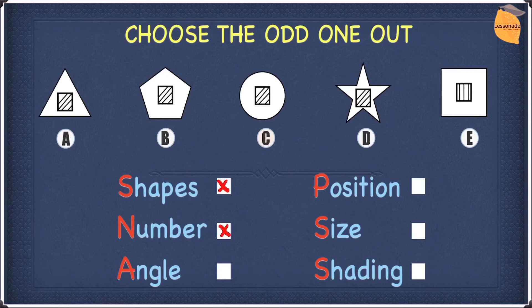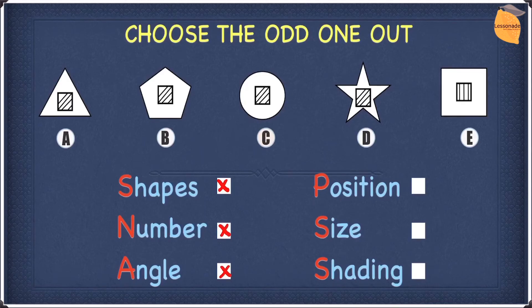So let's look at angle. All of the shapes above, they have different angles. So angle doesn't work. In terms of position, the position of the shape is the same because if you look at the inner shape, it's always in the middle. So for A, B, C, D, and E, the inner shape is always in the middle. So we cannot use this as an option to find the odd one out.